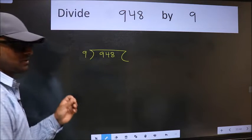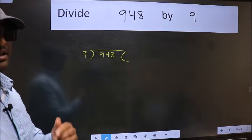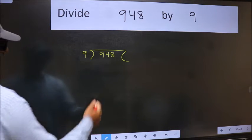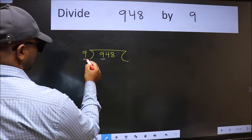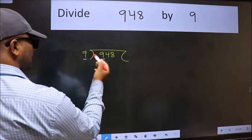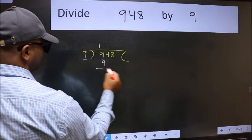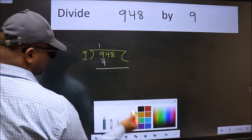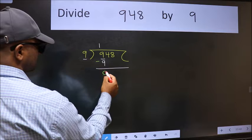This is your step 1. Next. Here we have 9 and here 9. When do we get 9 in the 9 table? 9 once is 9. Now we should subtract. We get 0.